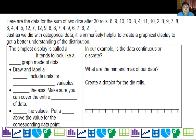The simplest way to display this is something called a dot plot. It tends to look a lot like a bar graph. So we're going to draw and label our horizontal axis, include units for continuous variables if you have them. Then you're going to scale the axis to make sure you can cover the entire span of data.